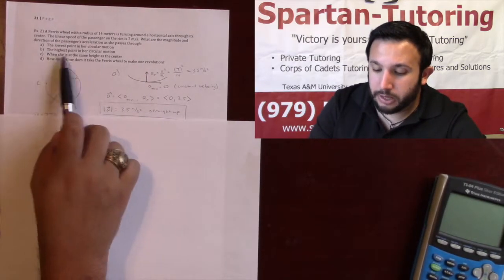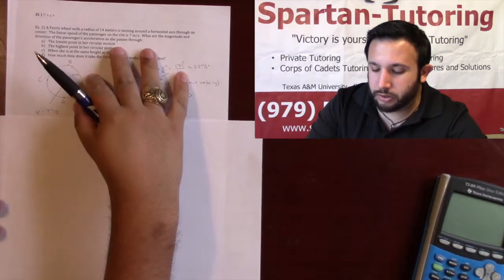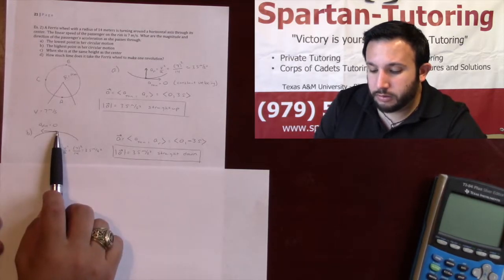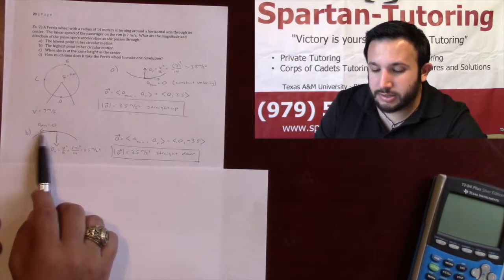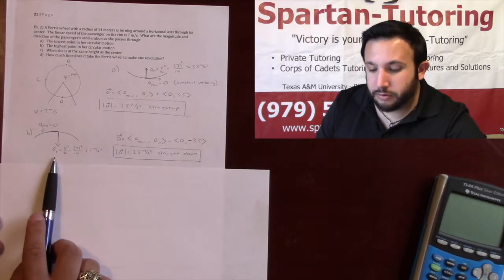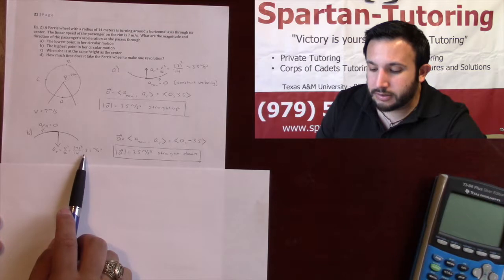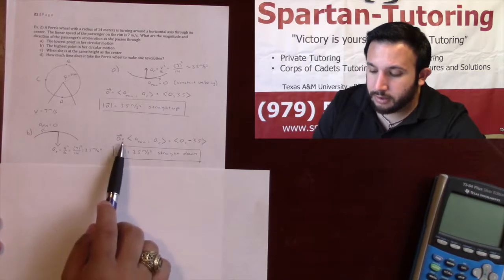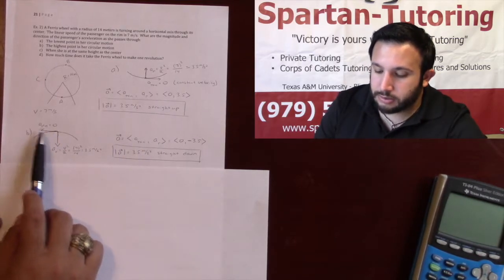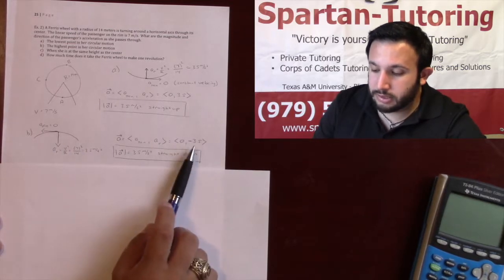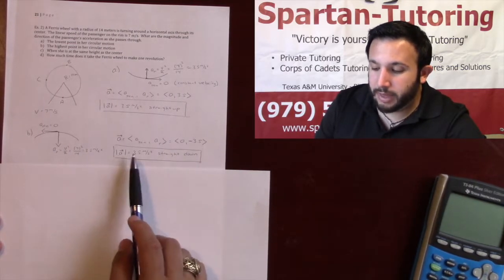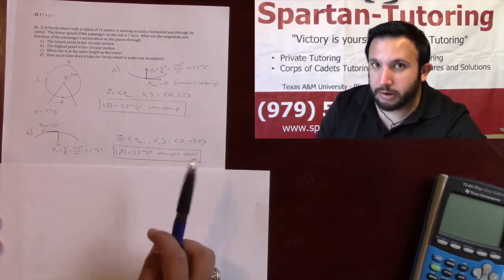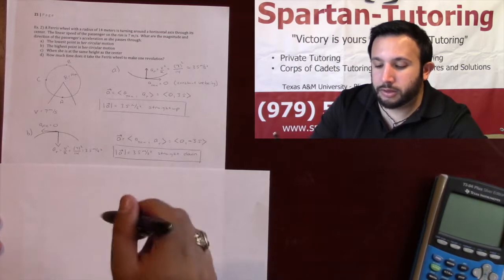Let's take a look at Part B — at the highest point of her circular motion. Because you're still moving with a constant velocity, your tangential acceleration is still 0. However, your radial acceleration, which is V squared over R, is once again 3.5. So my acceleration vector is just (0, −3.5), which means the magnitude is still 3.5 meters per second squared. And as for my direction, it's now straight down — going purely in the negative Y direction, with positive X to the right and positive Y up.